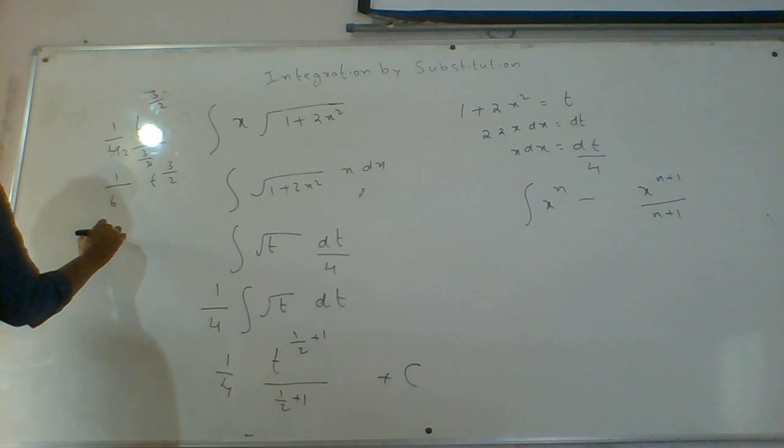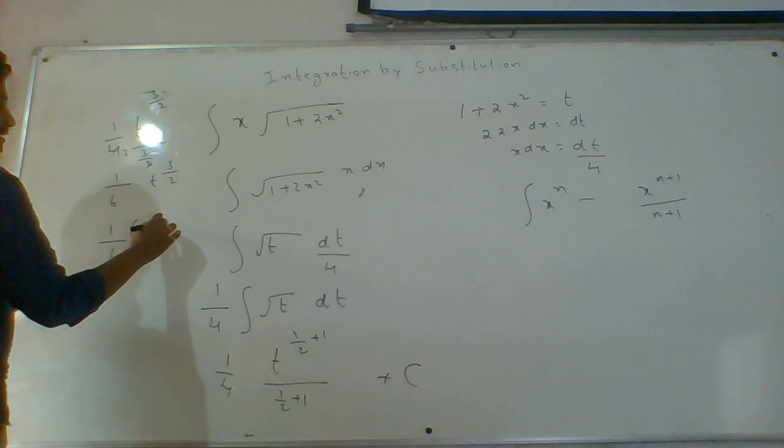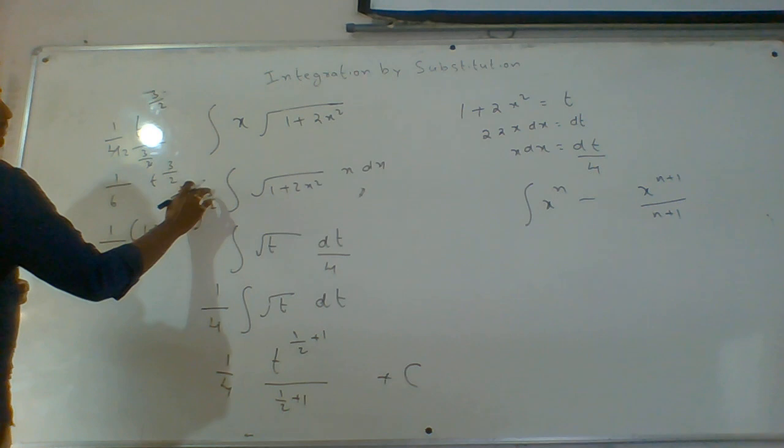In the place of t, substitute 1 plus 2x square. So the answer is 1 by 6 times (1 plus 2x square) whole power 3 by 2.